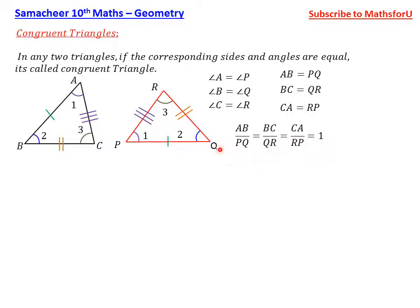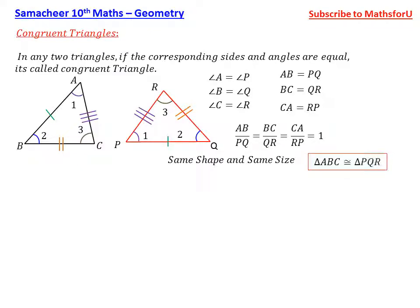In this condition, we will understand the angles. The same shape and the same size is congruent. How can we denote: triangle ABC is congruent to triangle PQR?